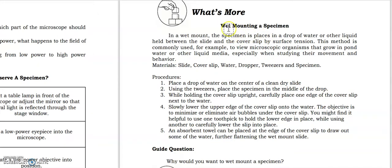And we have here the wet mounting a specimen. So in a wet mount, from the word wet, the specimen is placed in a drop of water or other liquid held between the slide and the cover slip by surface tension. And these are the procedures, the steps in doing the wet mount. Okay, just pause the video to follow the steps.